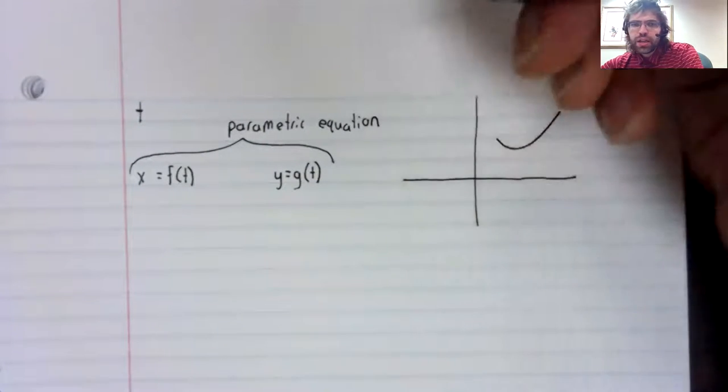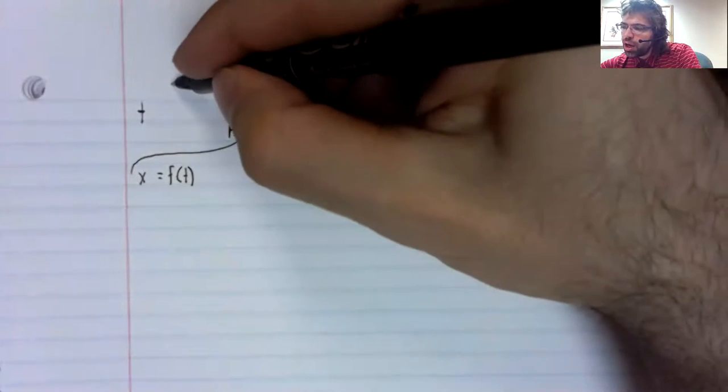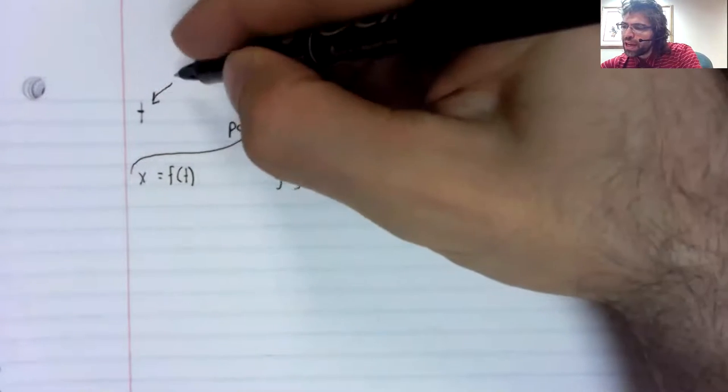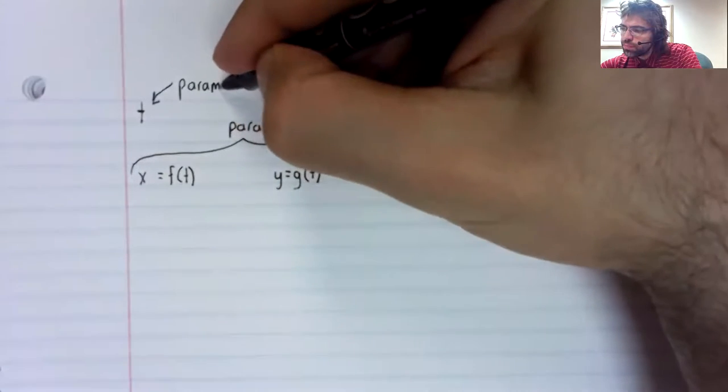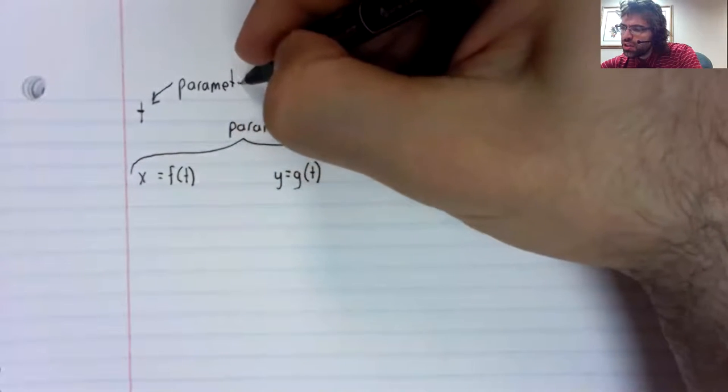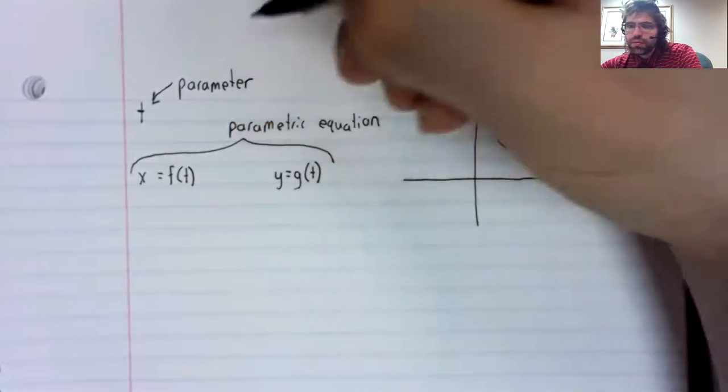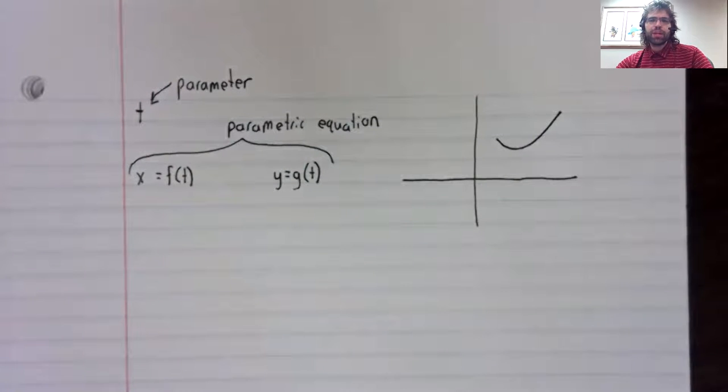And the word parametric comes from parameter. T is the parameter.